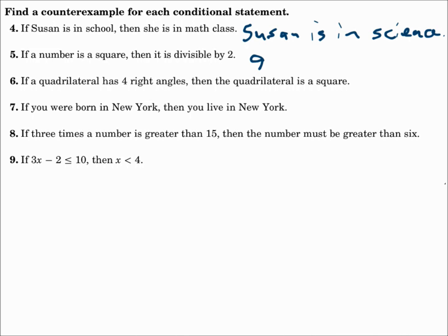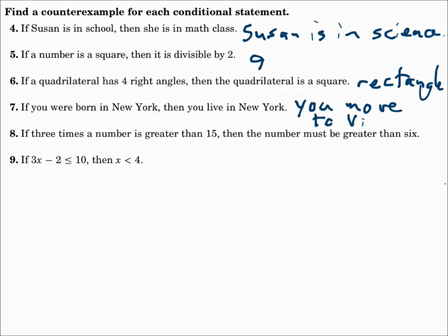Number six: if a quadrilateral has four right angles, then the quadrilateral is a square. Is there any quadrilateral with four right angles that's not a square? Sure — a rectangle. And that's your counterexample. Number seven: if you were born in New York, then you live in New York. What if you were born in New York and then you move? If you move to Virginia, you no longer live in New York — so you can be born in New York and live in another state. That's a counterexample.